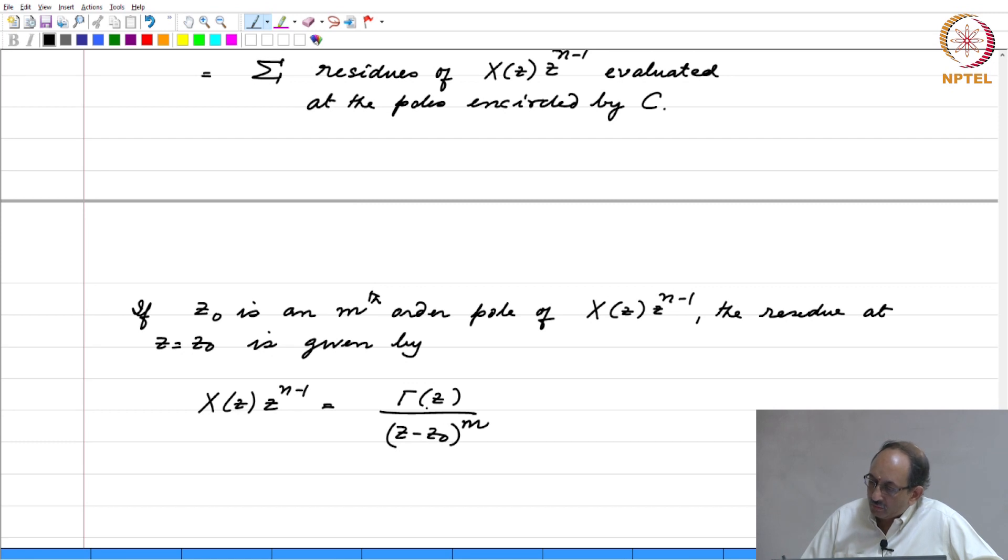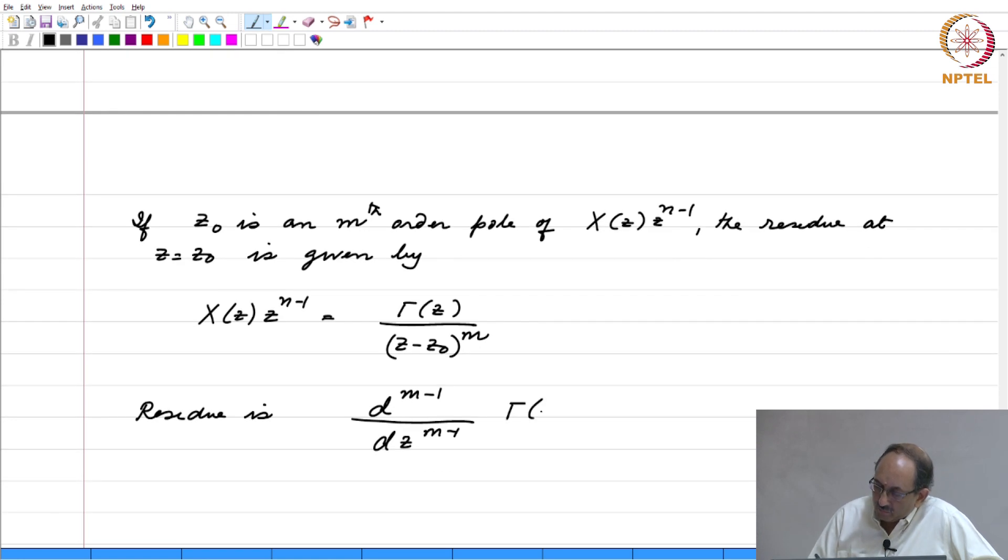Therefore, the residue value is given by the (m-1)th derivative of gamma(z) evaluated at z equal to z naught. And, this is nothing but (z minus z naught) to the m times X(z) times z to the n minus 1.